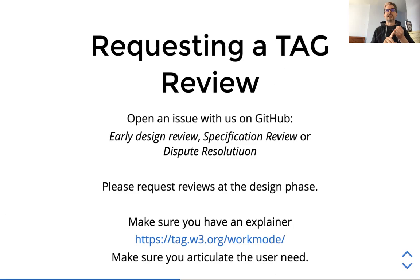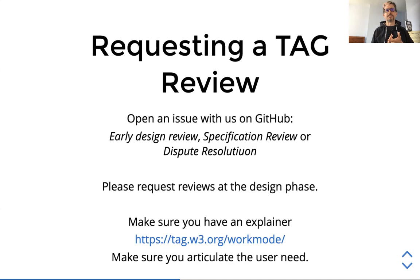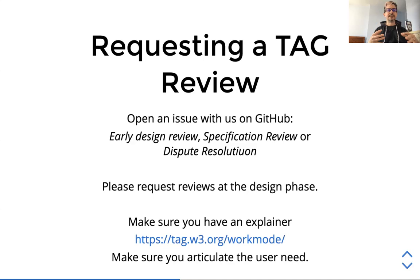For an early design review, if spec developers have an idea but probably not an implementation yet, and maybe don't have a clear idea of what venue this will go into, that could be a good candidate. We also have a specification review for specifications that are further along in development — they could already be in spec development within a WICG, a community group, or a working group. We also have a template for dispute resolution, specifically where somebody in a working group, ideally the chair, wants to get the TAG's opinion on a dispute that's happening in or between working groups.